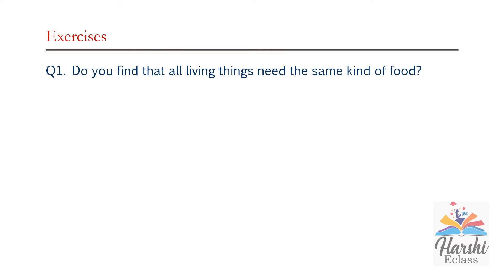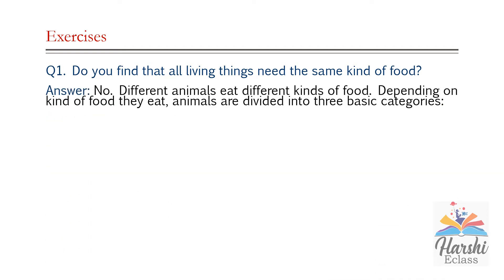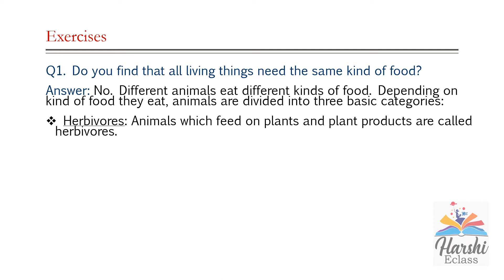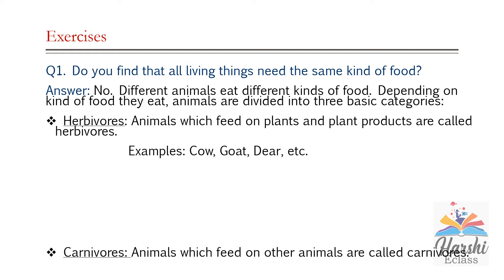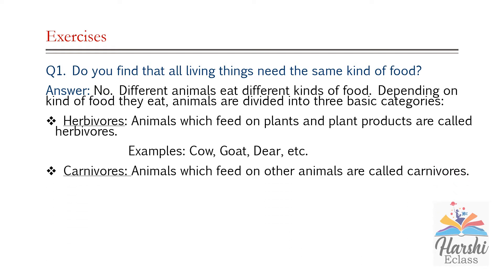Exercise question one: Do you find that all living things need the same kind of food? No, obviously different animals eat different kinds of food. Based on their food habits, animals are divided into three basic categories. First: herbivores — animals which feed on plants and plant products are called herbivores. Examples: cow, goat, deer, etc.